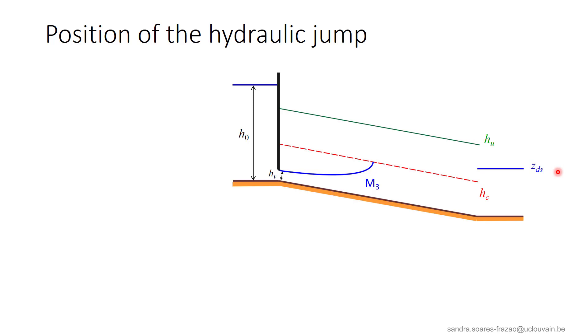As the water depth below the gate hv is smaller than hc, we know that we will have an M3 profile starting from the gate. Assume that in the present case, for example, this profile does not reach the downstream end of the channel.